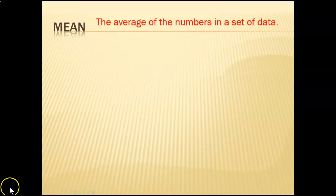Not that kind of mean — I'm talking about a mathematical mean. It is the average. I've written it in the definition in red: mean is the average of the numbers in a set of data. You should probably write this down. Who remembers how we find the mean or the average?